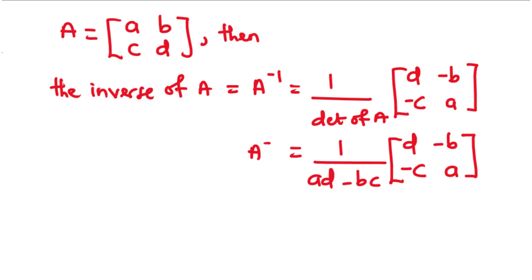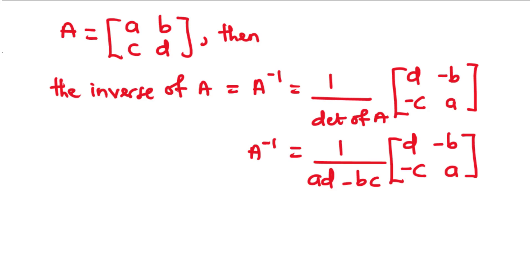This can be simplified as 1 over (A times D minus B times C) times the matrix D, negative B, negative C, A. So basically, to find the inverse of a 2x2 matrix, you first interchange the positions of the elements in the leading diagonals such that AD becomes DA. Next, you negate the elements of the other diagonals — B becomes negative B, and C becomes negative C. Then you multiply the resulting matrix by the reciprocal of the determinant.